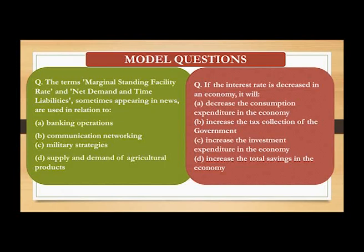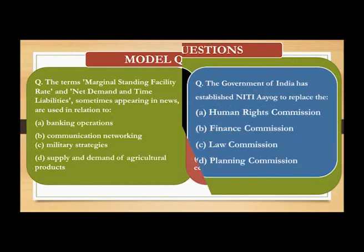Consider this economic concept question: if the interest rate is decreased in an economy, it will — Option A: decrease the consumption expenditure in the economy; Option B: increase the tax collection of the government; Option C: increase the investment expenditure in the economy; Option D: increase the total savings in the economy. There is an inverse or negative relationship between investment and interest rate. Interest rate is the cost of raising capital for investment. There will be lower investment expenditure during a high rate of interest and vice versa. So the right option is C.